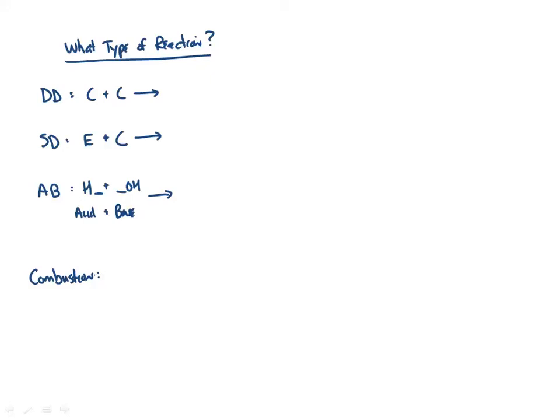For double displacements, we swap the cations — one copy at a time because a later step is to balance the charges. For single displacement, we choose to swap either a cation or anion, then check the activity series. For acids and bases, we know they always occur, so we swap the cations and add plus heat. For combustion, it's always the same — we always make CO2 gas plus H2O gas plus heat.